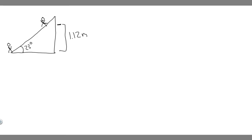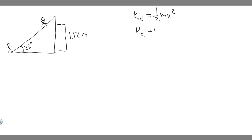To solve this problem there are two formulas you need to know: the formula for kinetic energy (KE) and potential energy (PE). The formula for kinetic energy is KE = ½mv², and for potential energy it's PE = mgy, where m is mass, v is velocity, g is gravity, and y is the height.